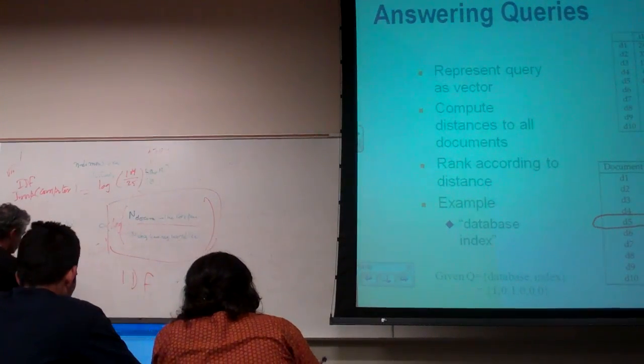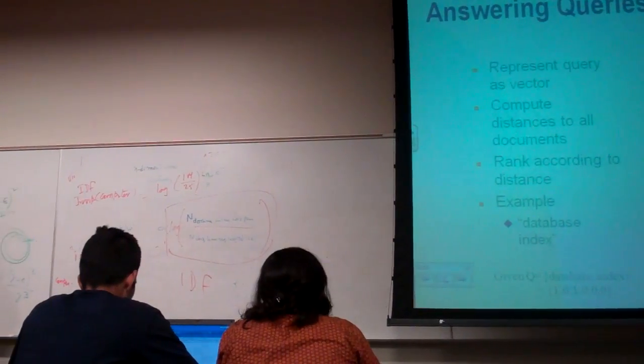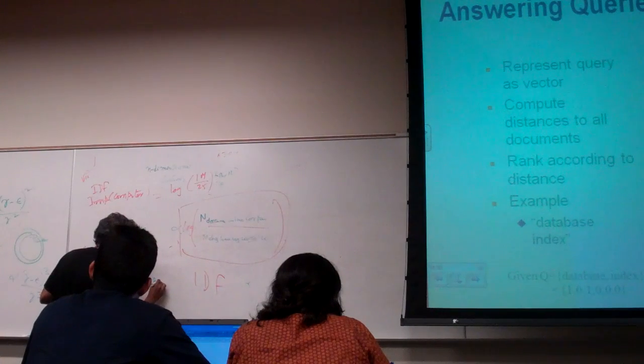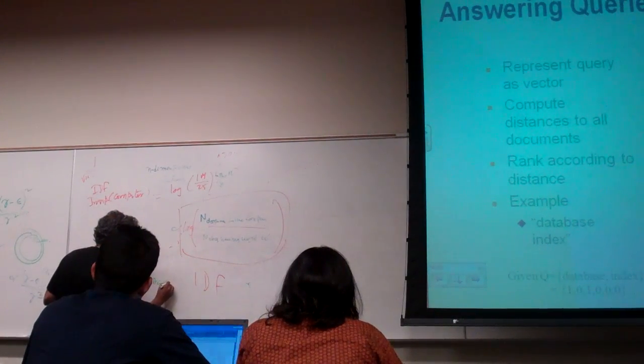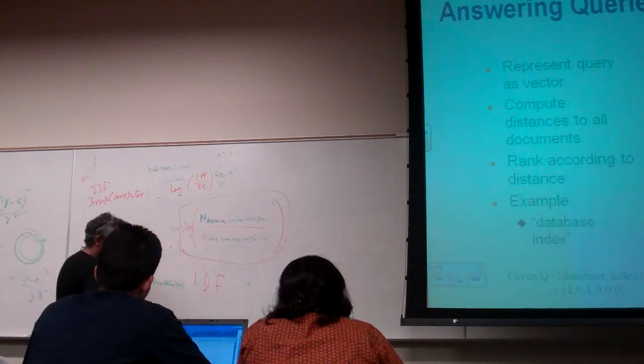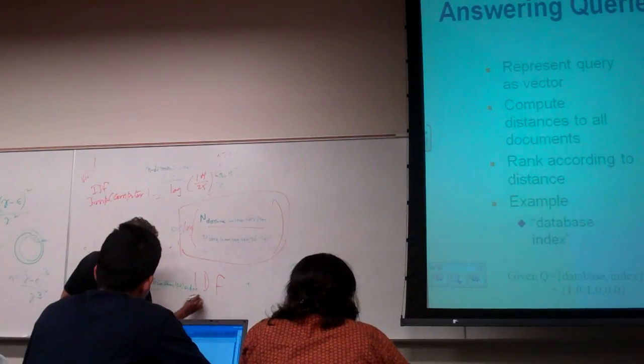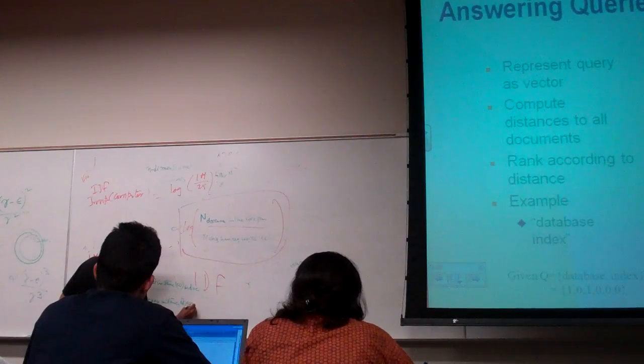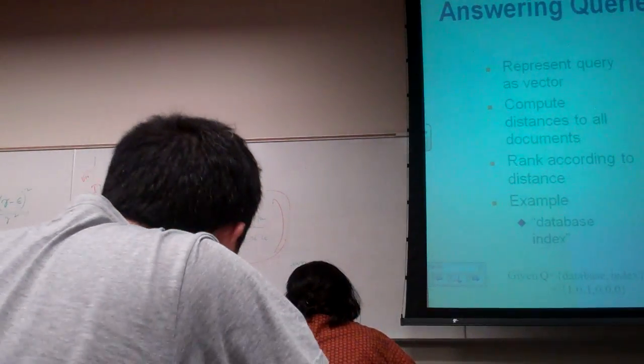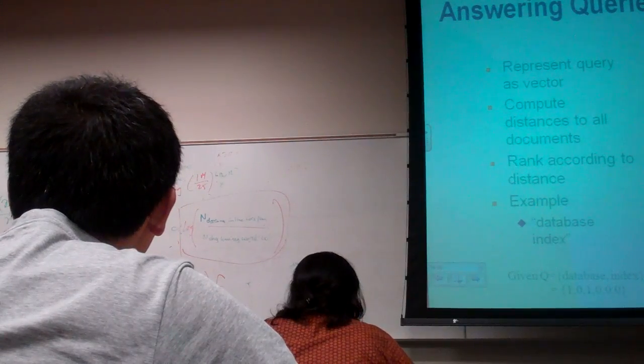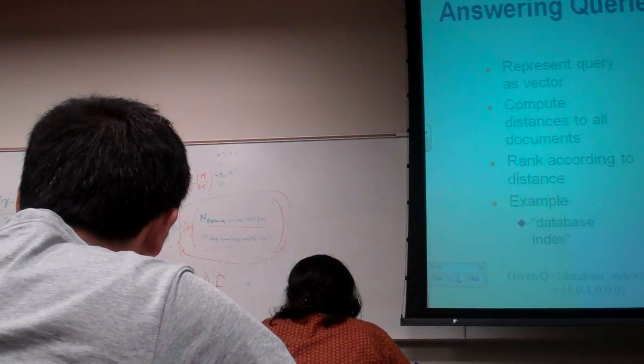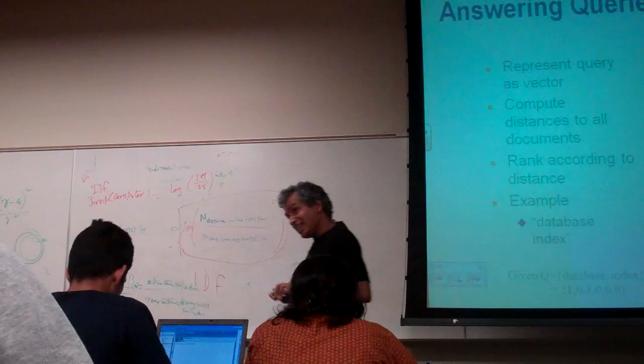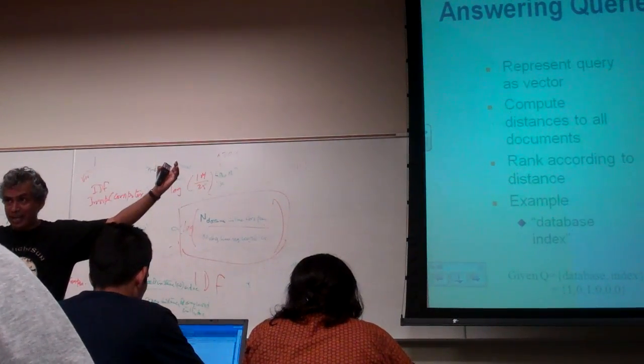That's TF, term frequency. And the normalized term frequency is just the number of instances of word W in the document divided by the maximum instances.